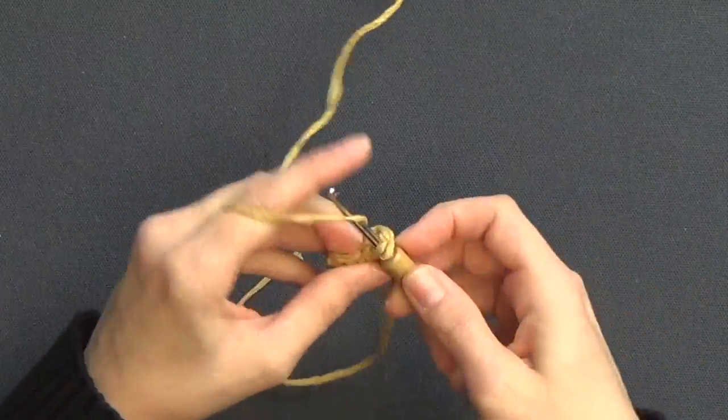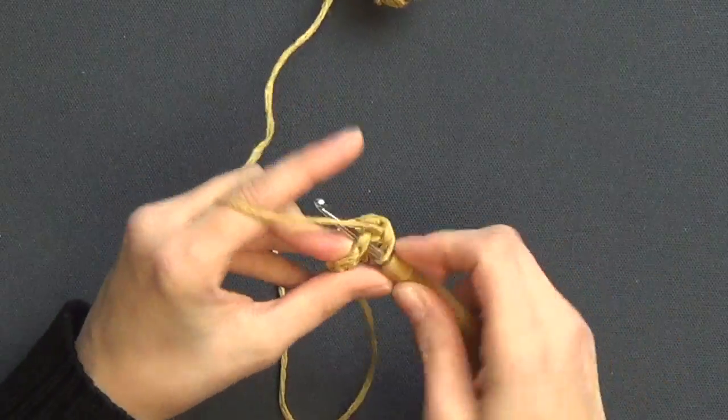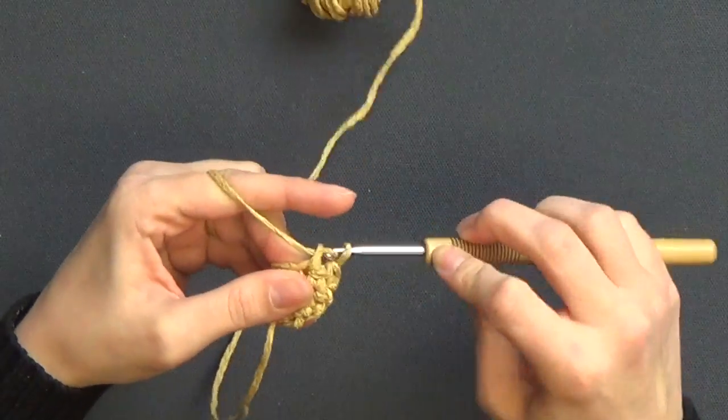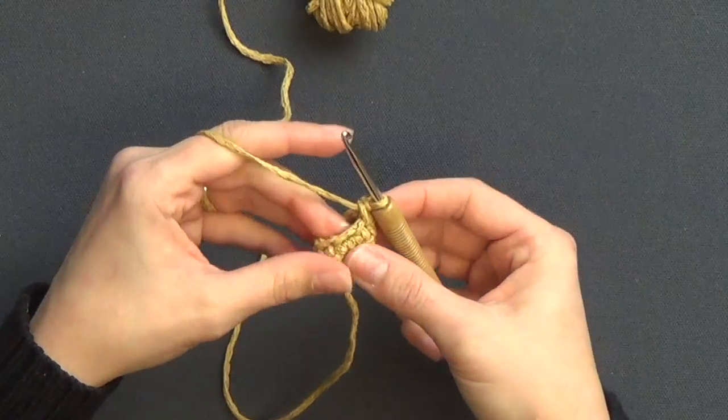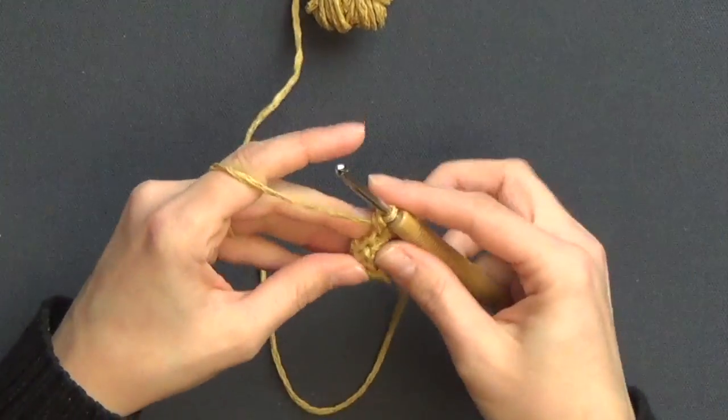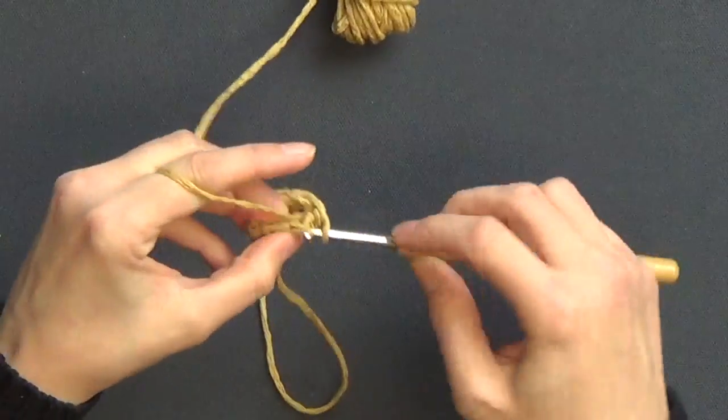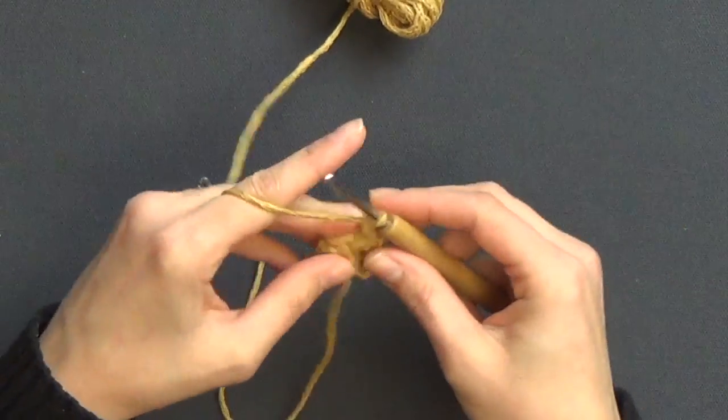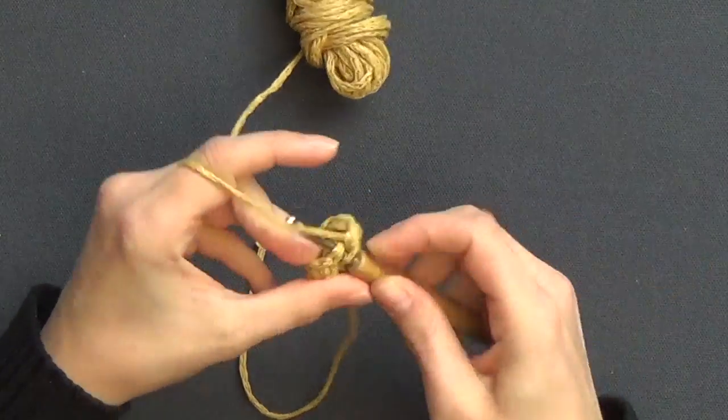Because this is such a small circumference it can be difficult to keep a nice tight tension as you're working. I find what works best is to kind of twist the piece each stitch and to really keep that yarn taut as I'm working.